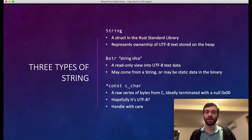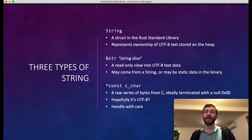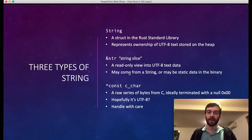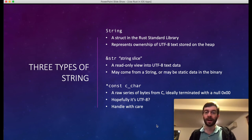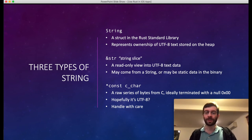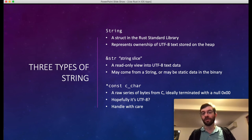Rust has two main types of string. There's the capital-S String, which is pretty similar to a Swift string — UTF-8 text stored on the heap, can be mutated, dynamically sized. Then we have a string slice, &str, which is a read-only view into some string data. Both of these are different from the kinds of strings we get from C or from FFI, which is a const *char — a pointer to a bucket of bytes basically. We don't know that anything about it is necessarily valid. To translate between that type and normal Rust types, we have to use the CStr and CString helpers.